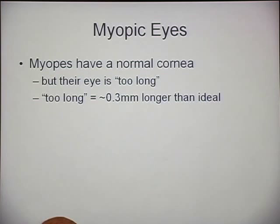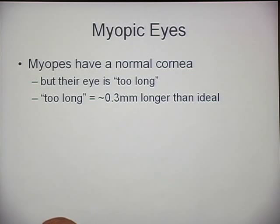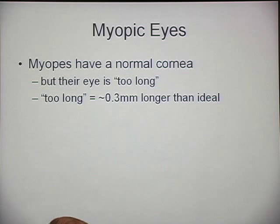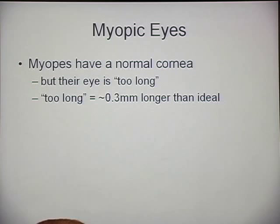Myopia is the most common visual complaint. Generally there's nothing wrong with the cornea — the eye itself is longer than average, so the image forms before the retina. Squinting does change the geometric optics a little but actually induces a small amount of astigmatism; it doesn't contribute to refocusing. It does stop down the pupil, which reduces the blur circle.